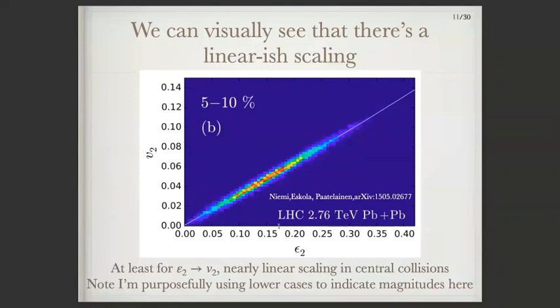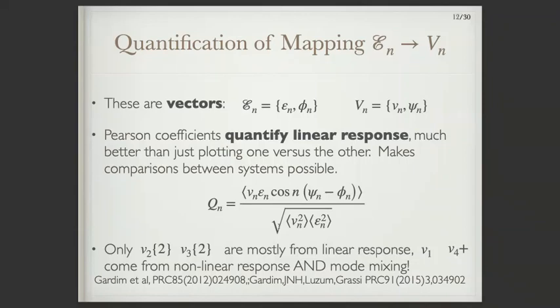To do this mapping, we use a Pearson correlation: we take the eccentricity vector with both magnitude and angle, and the final flow harmonic with both magnitude and angle, and compute a Pearson coefficient. If this equals one, it's a perfect linear mapping from initial to final state. If it's zero, there's no correlation, and if minus one, you have an anti-correlation. What we find is that V2 and V3 are mostly from linear response. However, for other flow harmonics like V1, that's extremely complicated. V4 has a lot of nonlinear contributions, so the mapping of beta 4 to V4 is a really non-trivial question.